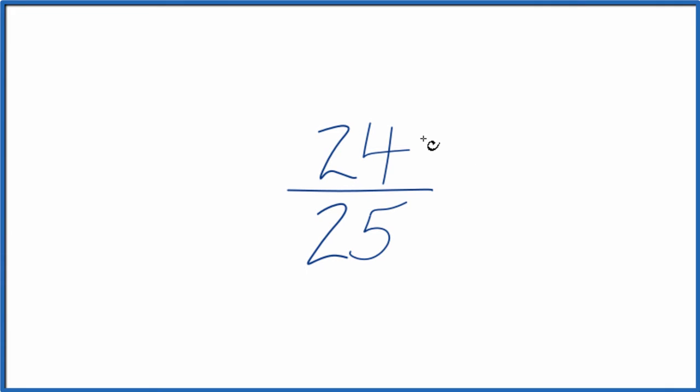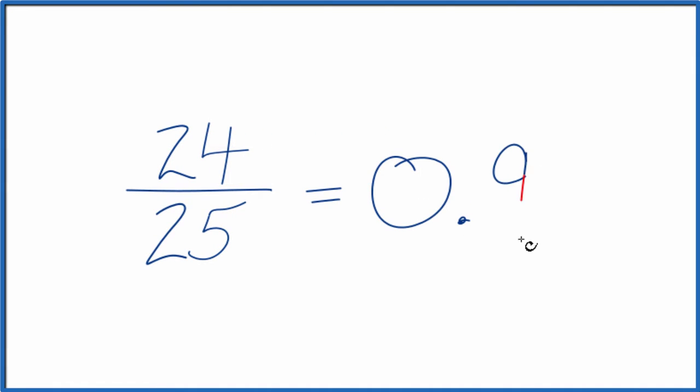Let's write the fraction 24/25 as a decimal. And there are two ways we could do this. We could just take and divide 24 by 25 on our calculator. We end up with 0.96.